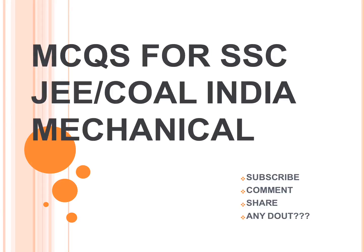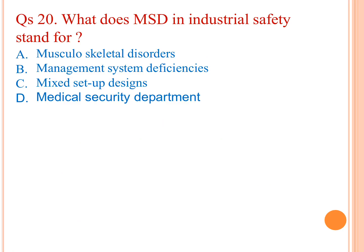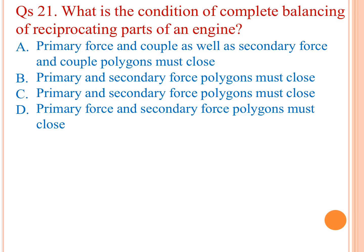Hello friends, welcome to my channel. What does MSD in industrial safety stand for? A) Musculoskeletal disorders, B) Management system deficiencies, C) Mixed setup designs, D) Medical security department. The answer is A.